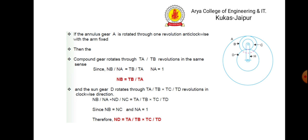As seen in the figure, assume gear a rotates through plus one revolution anti-clockwise. It meshes with gear b which also rotates in the anti-clockwise direction. So n_b / n_a = t_a / t_b. Since n_a = 1, then n_b = t_a / t_b. The sun gear d meshes with gear c, and since n_b must equal n_c, we get n_d / n_c = (t_c / t_d) × n_b. Therefore n_d = (t_a / t_b) × (t_c / t_d).